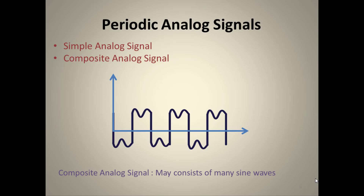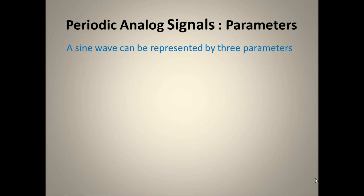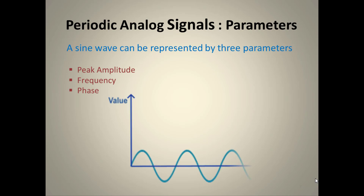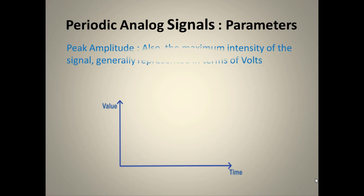There are some parameters related to periodic analog signals. A sine wave can be represented by three parameters: the first is peak amplitude, the second is frequency, and the third is phase. We will study all these with a simple example.